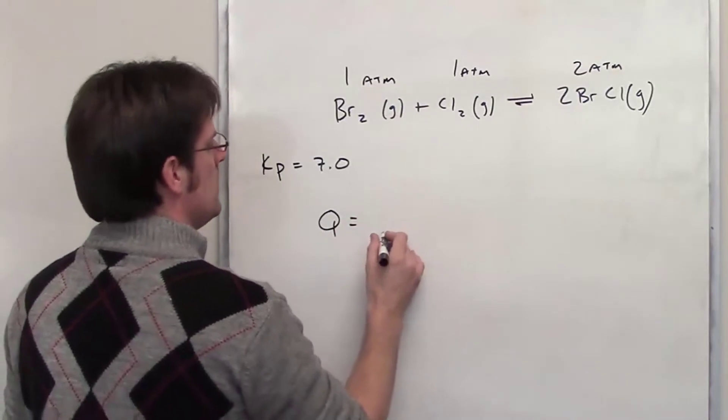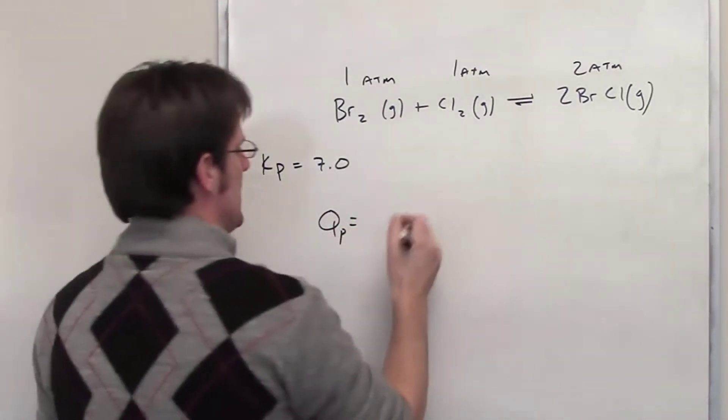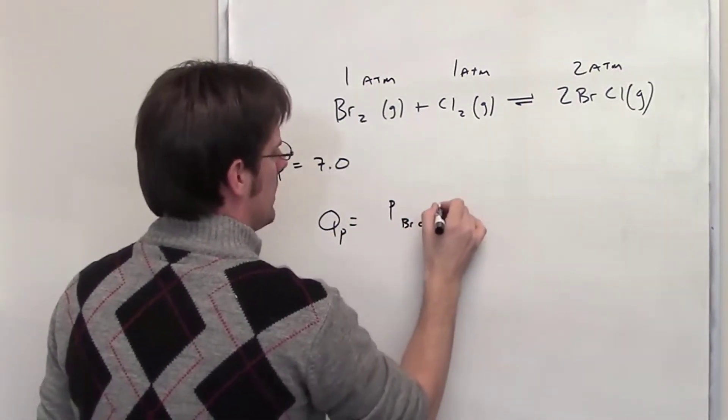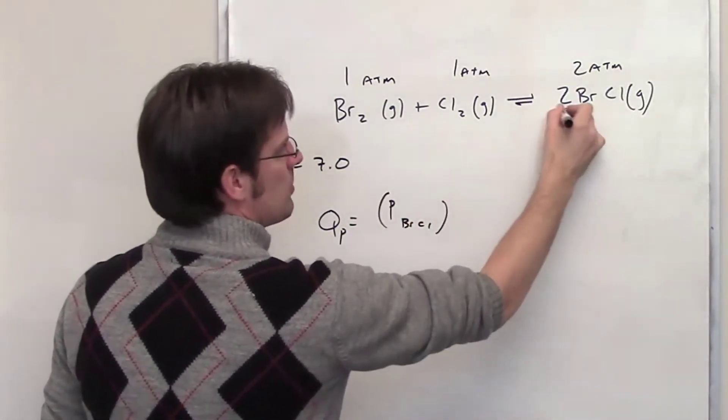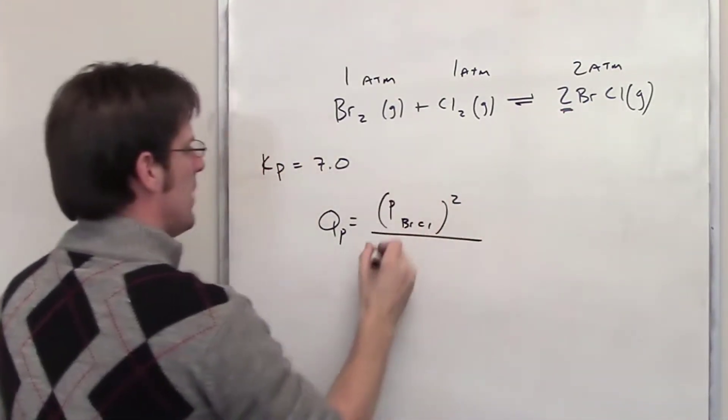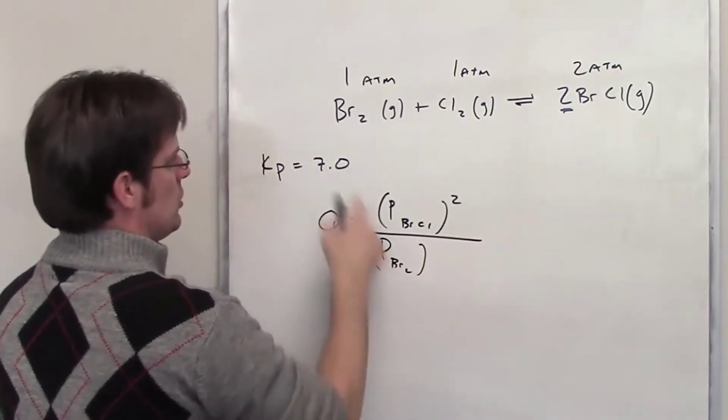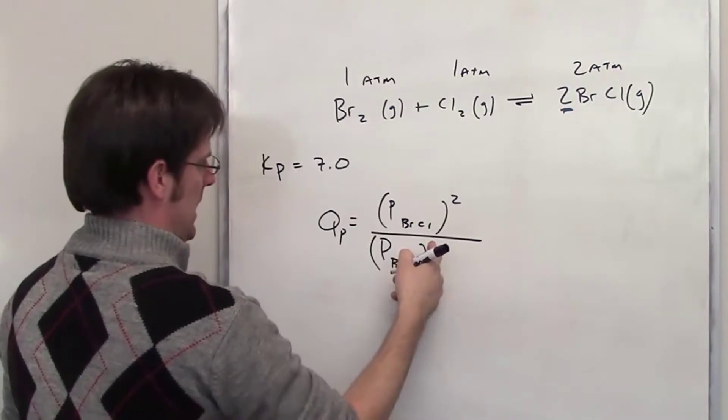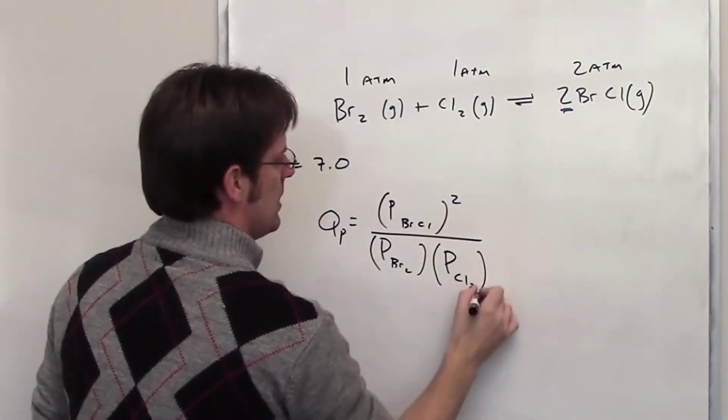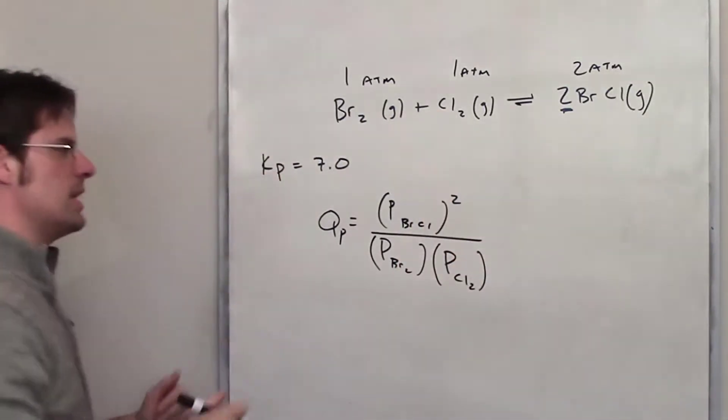So in this case Q is going to be equal to, and with respect to pressure I should say Qp is going to be equal to the pressure of the product bromine chloride squared because it has a two coefficient that becomes an exponent here, divided by the individual pressures of the reactants Br2. There's a coefficient of one in front of that so that becomes an exponent, multiplied by the pressure of Cl2 whose coefficient is once again one which becomes an exponent.